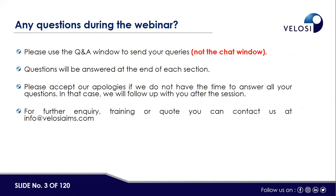During this webinar we encourage you all to keep asking questions. You can type your queries in the Q&A window and will receive a reply there or live. We will try to answer as many questions as possible during the session and will also have a detailed Q&A session after the topic is completed. Please accept our apologies if your question is not addressed due to the high volume of questions. You can also contact us at info@lawcians.com. We will be issuing participation certificates to all those who have attended at least 80% of the webinar.